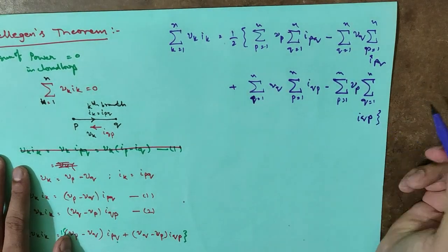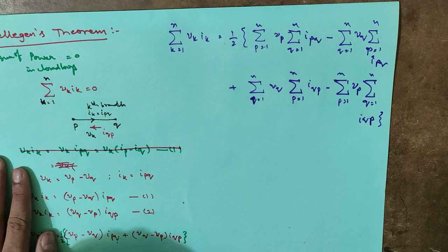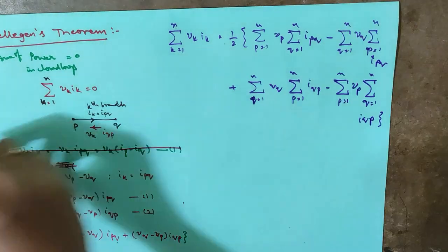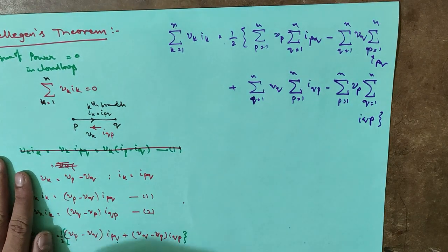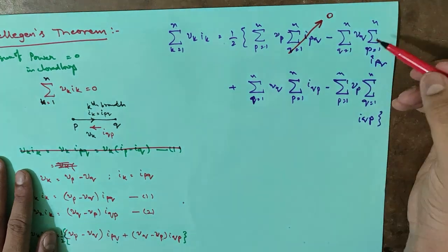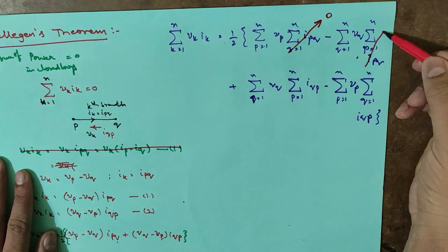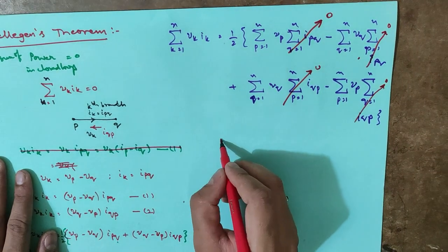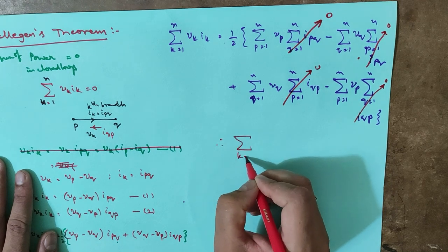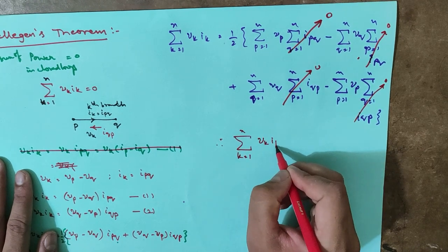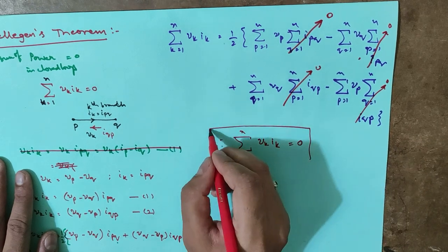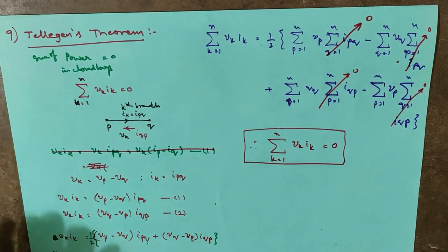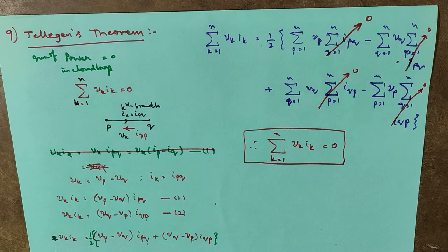According to Kirchhoff's Current Law, sigma Ipq equals zero. So all these current summation terms become zero — this part is zero, this part is zero, and this part is zero. Therefore, sigma k equal to 1 to n Vk·Ik equals zero. This is the proof of Tellegen's theorem.